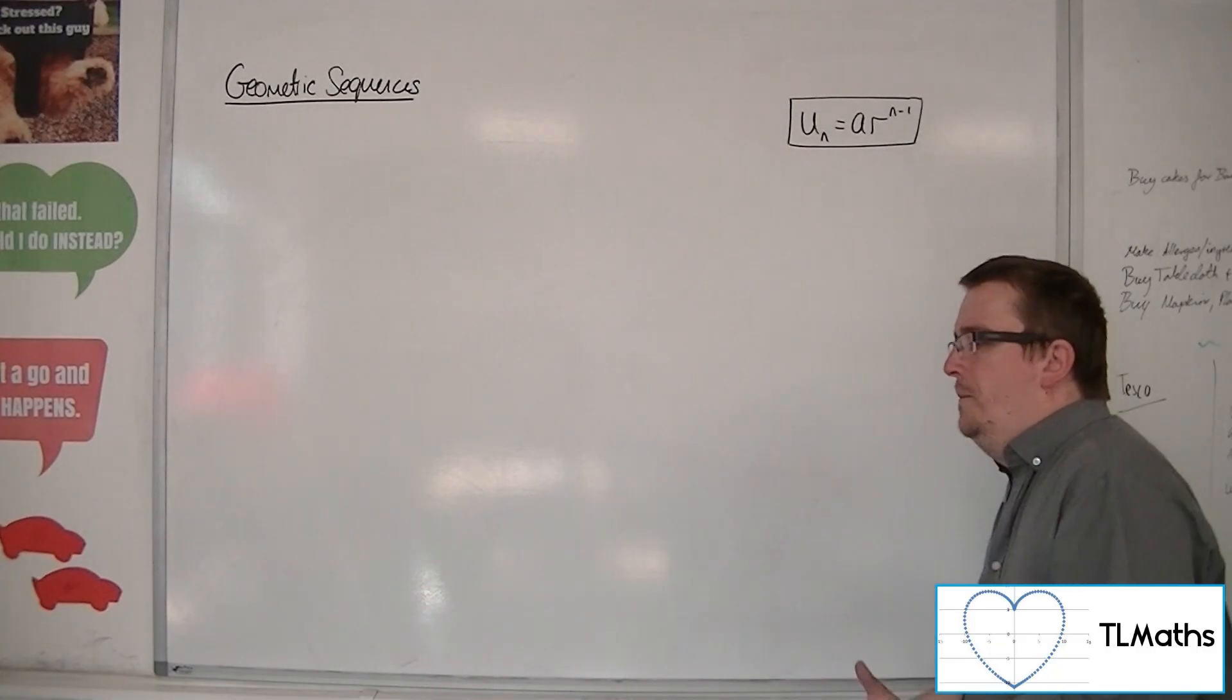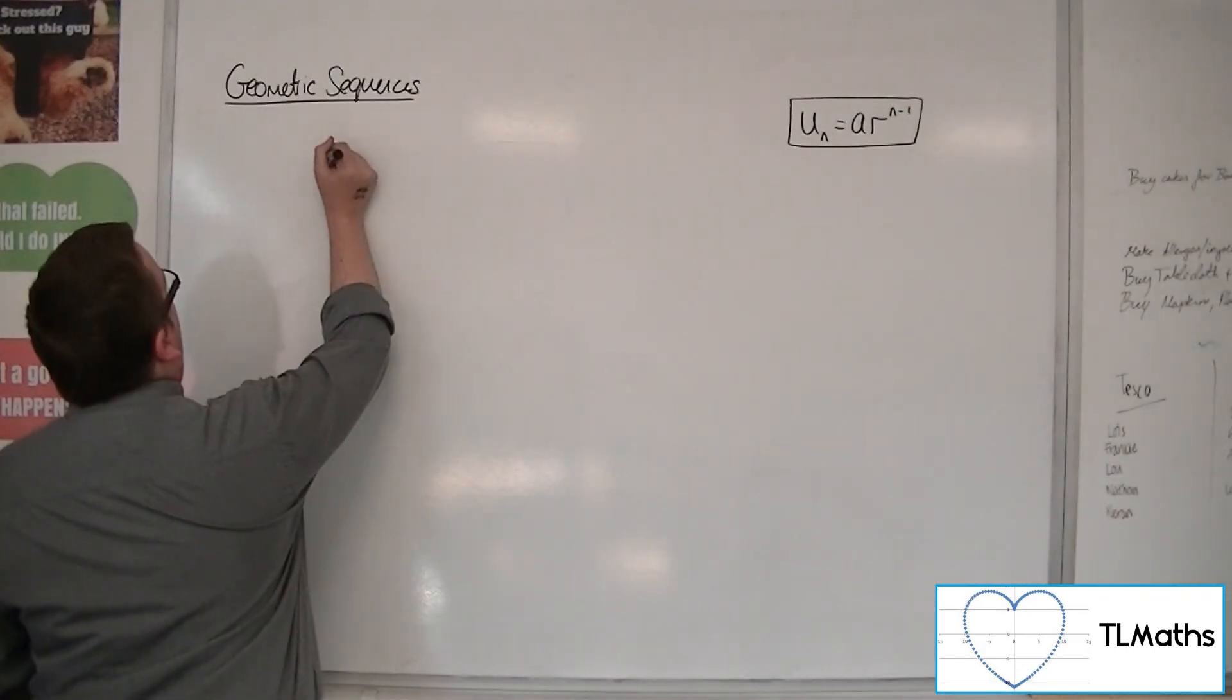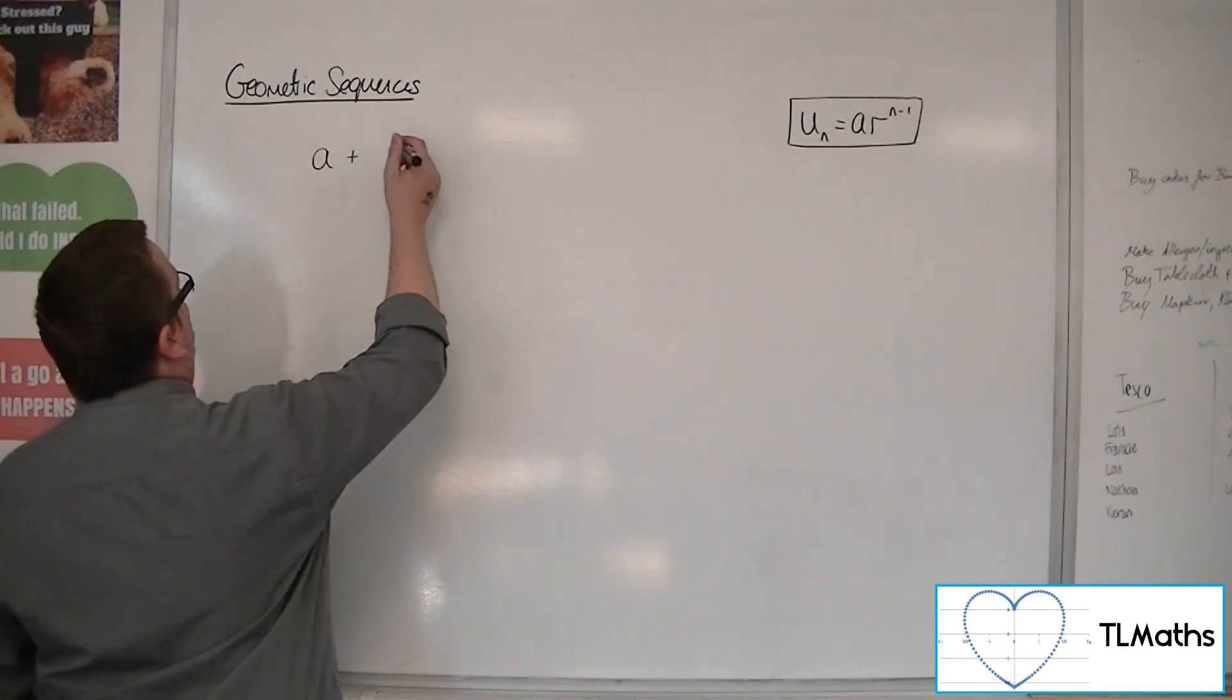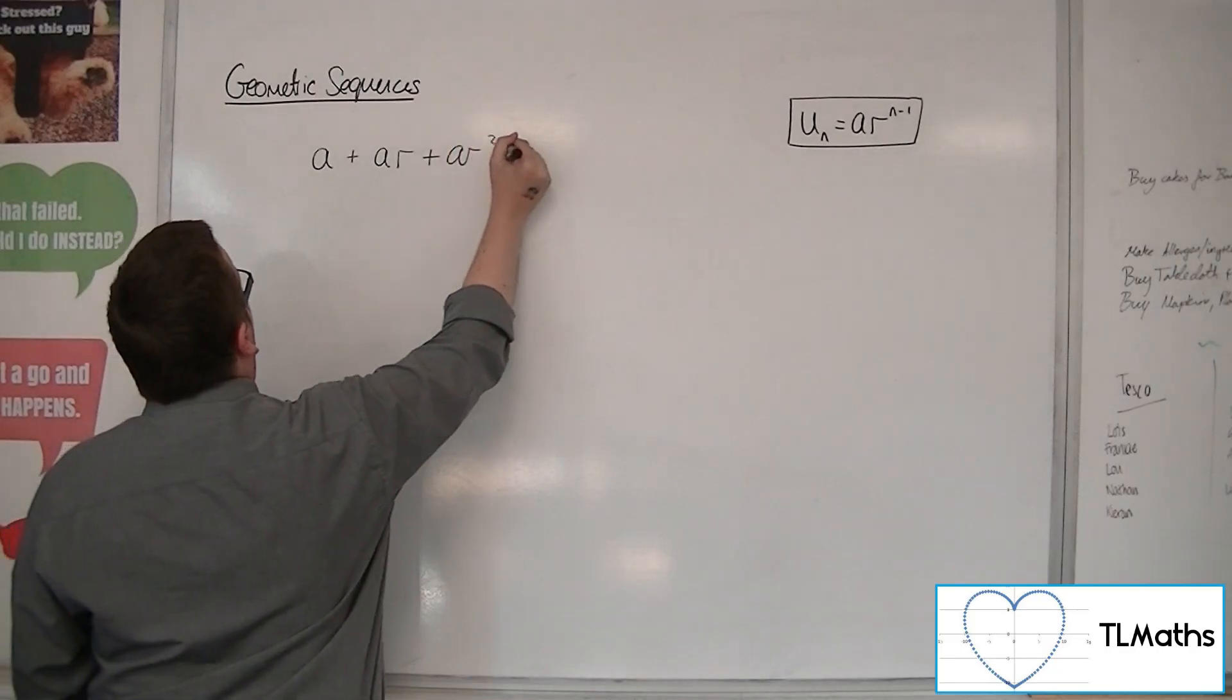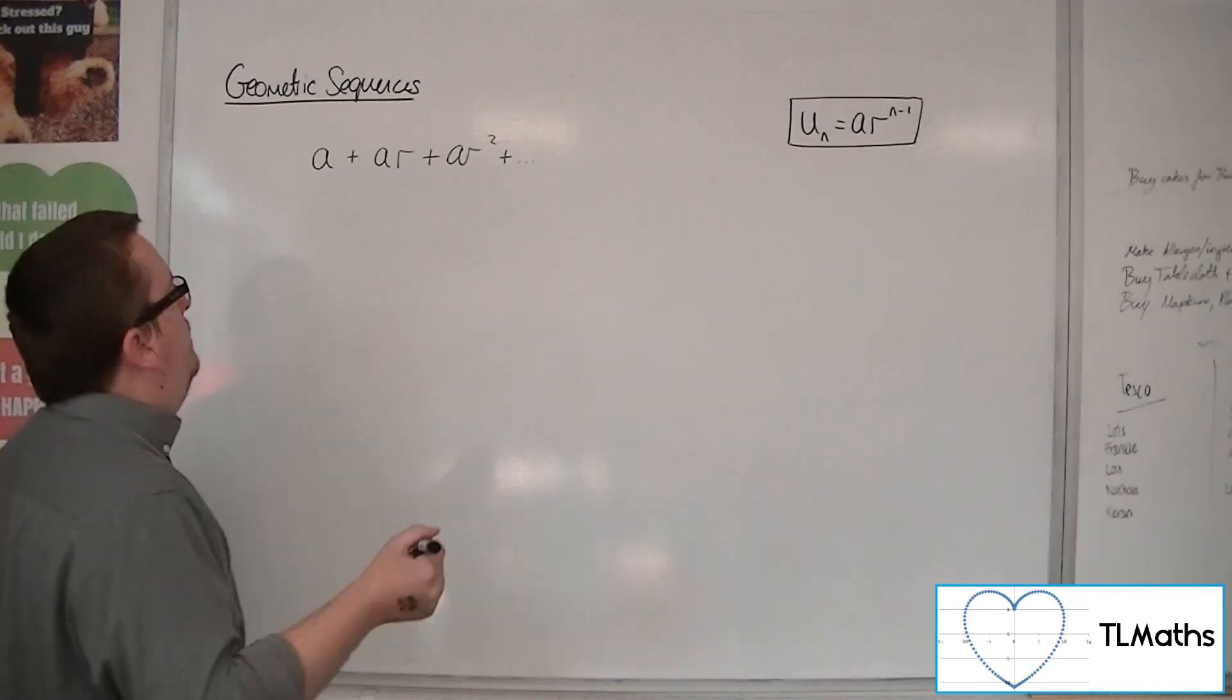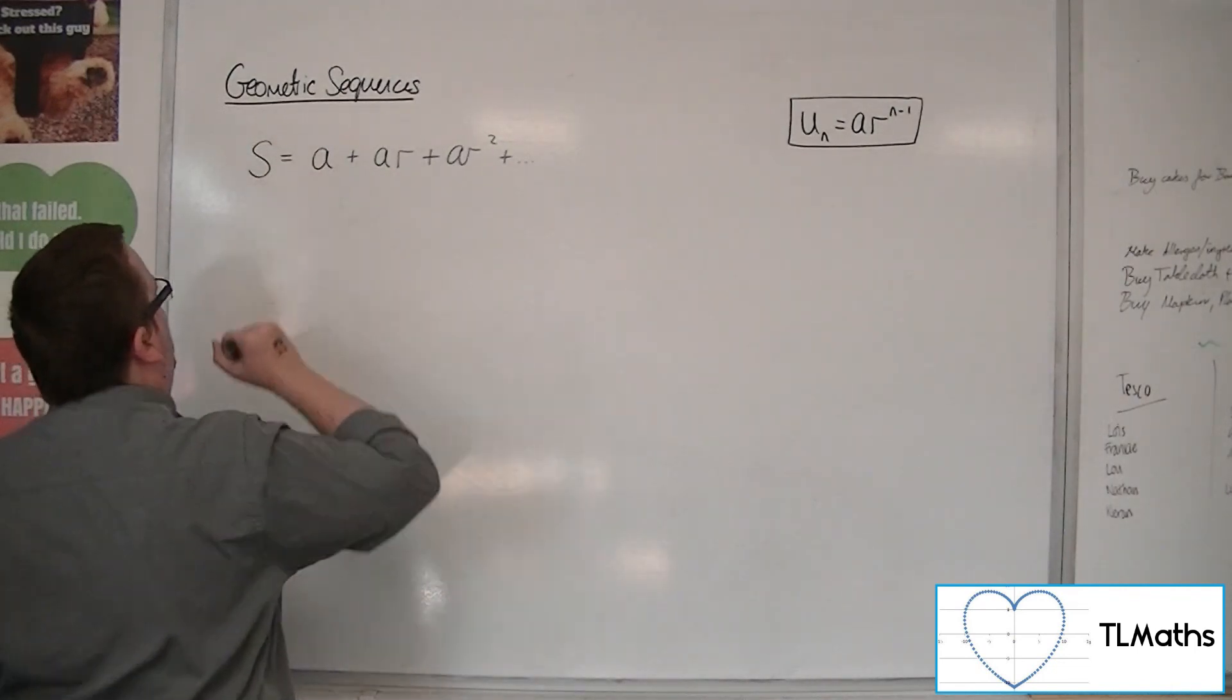We know that a geometric sequence will start with a, and the next term if I'm turning into a series will be ar, and then I'd have ar squared, and so on. So that is what we can write as our sum.